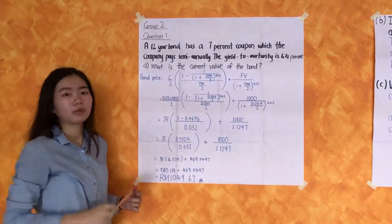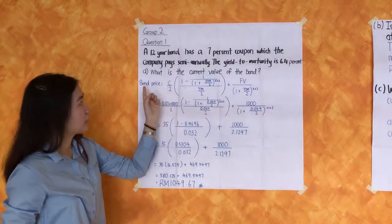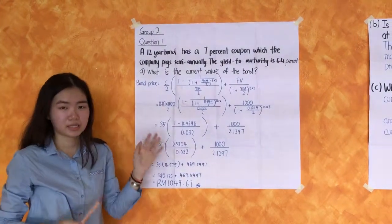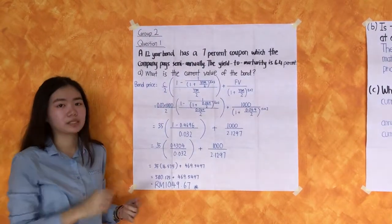Why must the annual coupon payment be divided by 2? Because the question tells us that the company pays semi-annually. So the C annual coupon payment must be divided by 2.